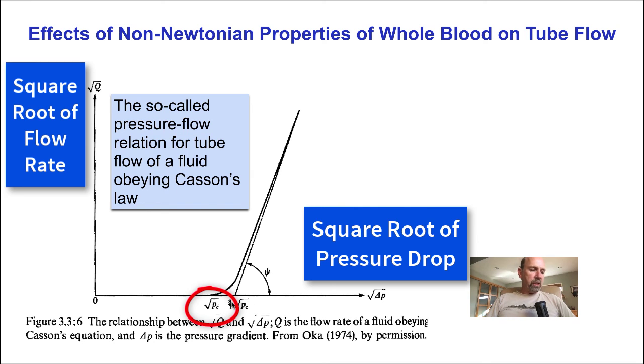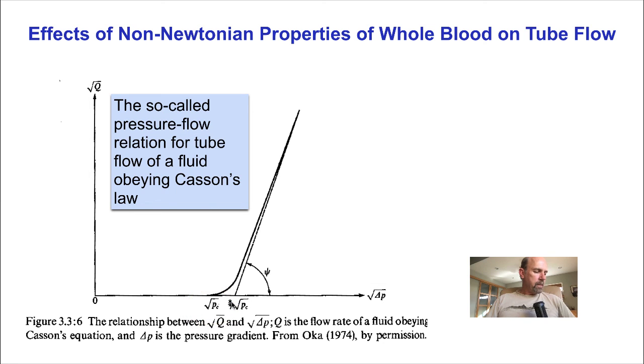But this property of a finite pressure being required to flow blood can be seen when blood is in a capillary tube, even when surface tension is removed by eliminating the air-liquid interface with another liquid, such as saline. This is evidence for the yield stress of whole blood.